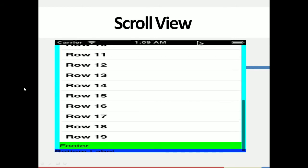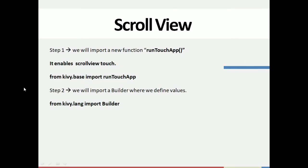Now let's see how the code is done for ScrollView. First, we will import a new function called run_touch_app, which is available in the Kivy library. When we import run_touch_app, it enables the ScrollView touch. The code for that is: from kivy.base import run_touch_app. Then we'll import Builder, where we define values such as the text, its size, height, and the ScrollView x-axis and y-axis values. For that, we import Builder from kivy.lang.